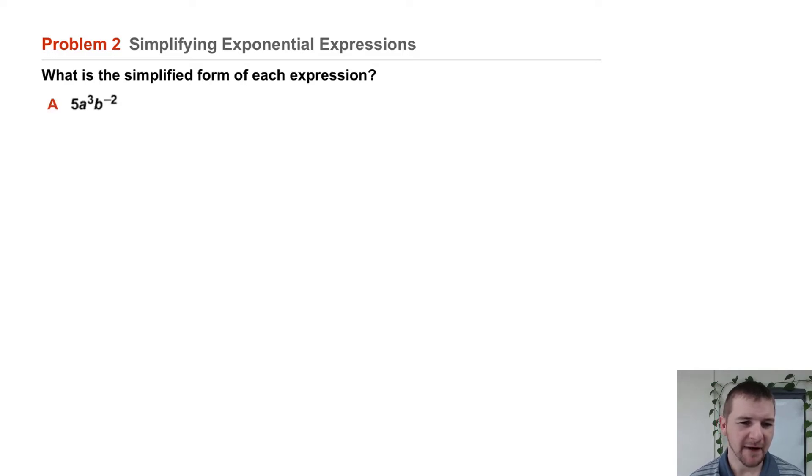Part A: 5a cubed b to the negative 2 power. We should use the definition of negative exponent. We identify the b to the negative 2 power as being the part of this expression that isn't in simplest form.